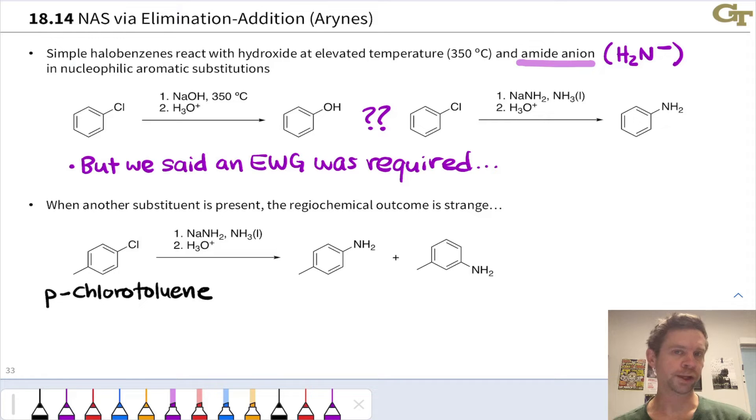This is parachlorotoluene, another way to name the compound. The paramethyl aniline is the expected product. This seems to be derived from addition of the nucleophile here, followed by loss of the chloride leaving group, and then protonation of an N-minus generated under the reaction conditions with acid.